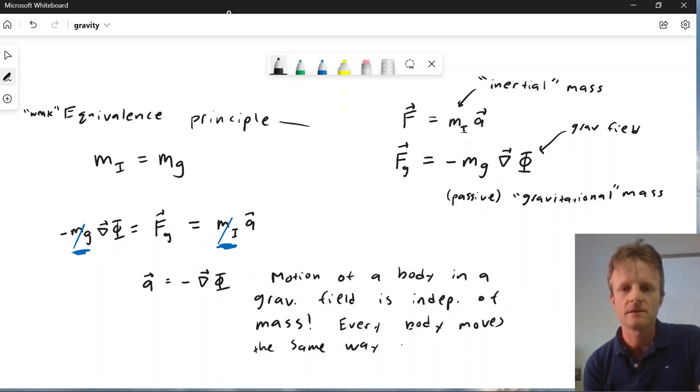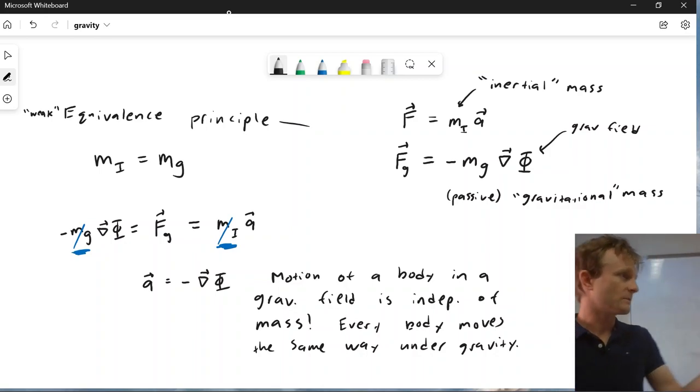And, you know, if gravity were the only force in the universe, it would be a little crazy to even introduce this M, right? The equation is acceleration equals minus grad phi. Why did I decide that I should multiply both sides by M and call that force? It's totally unnecessary. But, of course, it works for other objects as well.